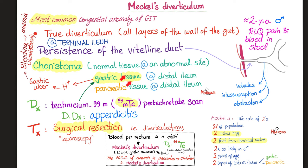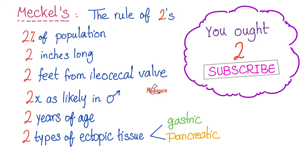How can we find the choristoma? You can use nuclear medicine — technetium scan. To manage Meckel's diverticulum, you can remove it — a diverticulectomy — which can be performed laparoscopically. Meckel's diverticulum and the classic mnemonic: the rule of twos. It affects 2% of the population, is 2 inches long, located 2 feet away from the ileocecal valve, two times more likely in males than females, typical presentation around 2 years of age, and has 2 types of ectopic tissue: gastric tissue and pancreatic tissue growing abnormally in the intestine.